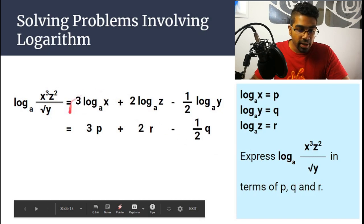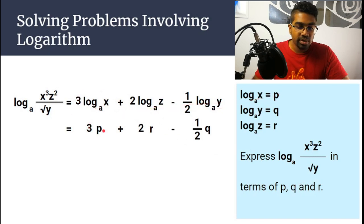So here we have log_a(x), which equals p. So this will become 3p. Log_a(z) equals r, and this will become 2r. And log_a(y), which equals q. So this will be (1/2)q. And this is our final answer.